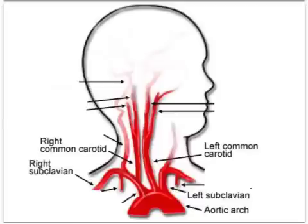The previous diagram only showed one carotid artery as a side view, but there are actually two carotid arteries — a left carotid artery and a right carotid artery — and they come up both sides of your neck.